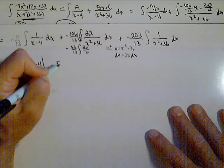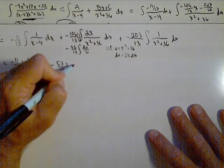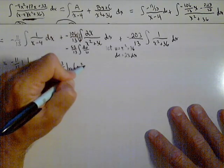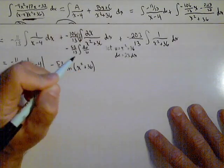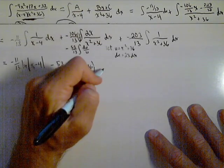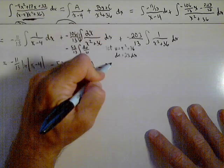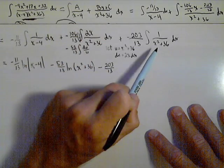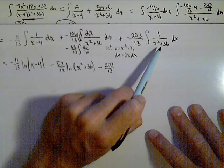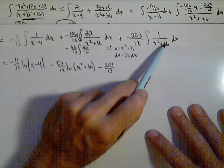So this is minus 53 over 13 times the natural log. Now this time we don't need absolute value because the U was just x squared plus 36. So we can use parentheses. And lastly, I have the minus 203 over 13. If you don't recognize this, this is actually an arctan. What we're gonna need to do, because there's a 36 here,